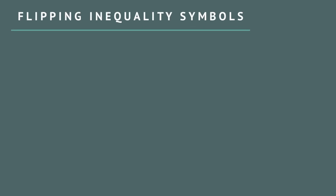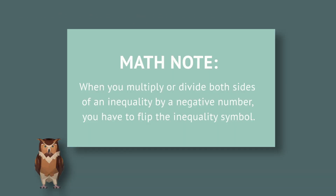One way in which solving equations and solving inequalities is different is that sometimes with inequalities you may have to flip the inequality symbol. This happens when you multiply or divide by negative numbers. This doesn't happen when you're solving an equation.